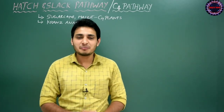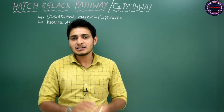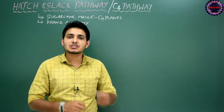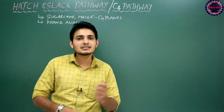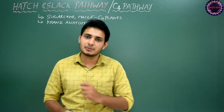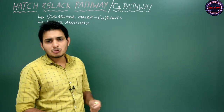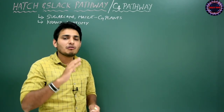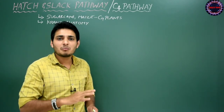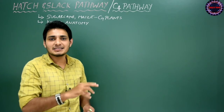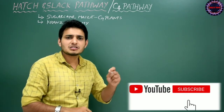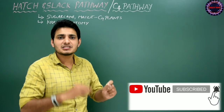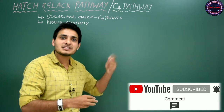Hello everyone, welcome to Newtube. I am Arun Kumar. Here I am going to explain the Hatch and Slack pathway, because these two scientists discovered this pathway in some plants, hence the name. It is also called the C4 pathway because the first product of this pathway is a 4-carbon compound, that is oxaloacetic acid. In the C3 pathway, the first product is 3-phosphoglyceric acid, a 3-carbon compound, hence the name C3 pathway.